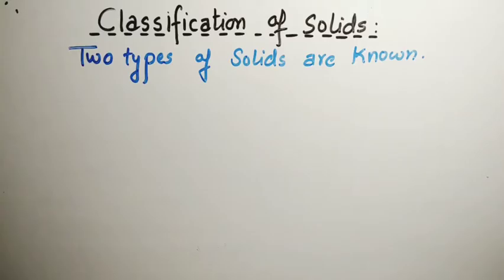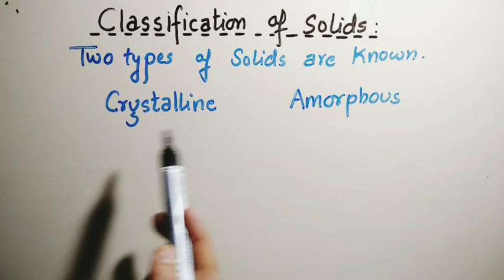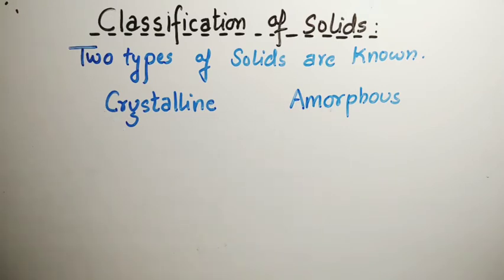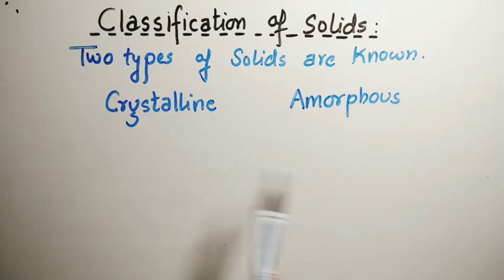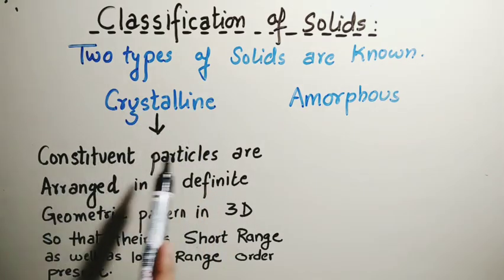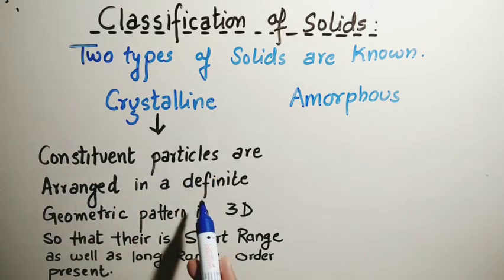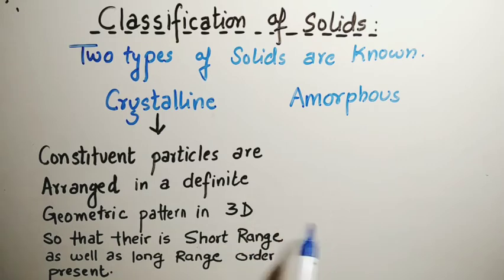The next topic is the classification of solids. Two types of solids are known: crystalline and amorphous. We will discuss their properties side by side — this is an important topic, as questions are asked on the differences or on particular properties between crystalline and amorphous. A solid is said to be crystalline if its constituent particles are arranged in a geometric pattern in three dimensions so that both short range as well as long range order is present, for example in the case of metals and non-metals.